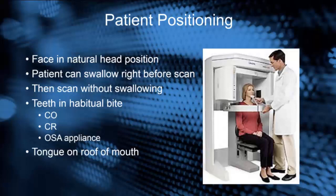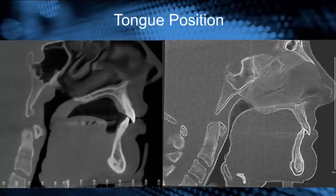Have the patient's teeth closed in their habitual bite — whether it be centric occlusion, centric relation, or whether you've made them a sleep apnea appliance to wear during the scan. We like to have the patient's tongue on the roof of the mouth so the tongue is not posterior, giving us incorrect measurements. The image on the right shows a correct tongue position where the tongue is on the roof of the mouth and the airway space is closed. On the left, the airway space on the palate is open, meaning the tongue is postured back and not giving accurate airway information. Tongue position is critical.